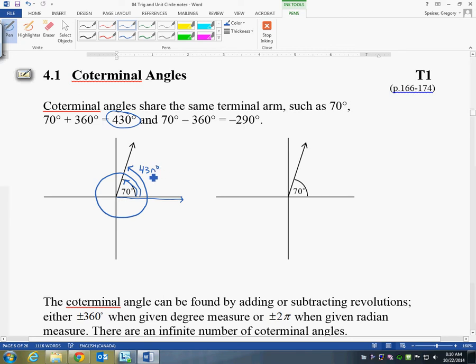So 70 degrees and 430 degrees are not the same. 430 does an extra revolution, and then the 70, but they are coterminal. If you just saw the initial arm and the terminal arm, you wouldn't be able to tell the difference. But the difference is it does that extra revolution.